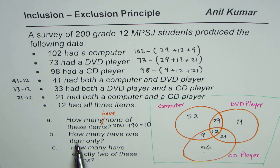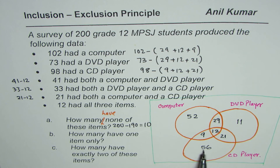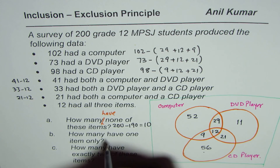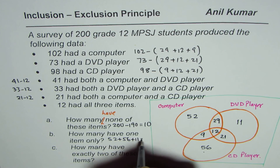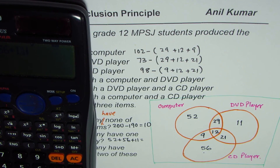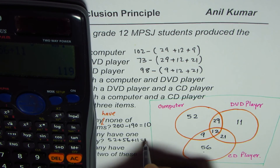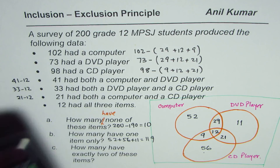The second question is: how many have one item only? Those are the students in the non-overlapping parts of each circle. So we add 52 plus 56 plus 11, which gives us 119. So 119 students have exactly one of these items.